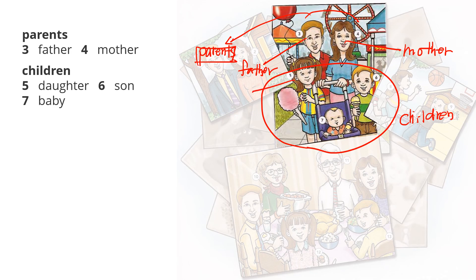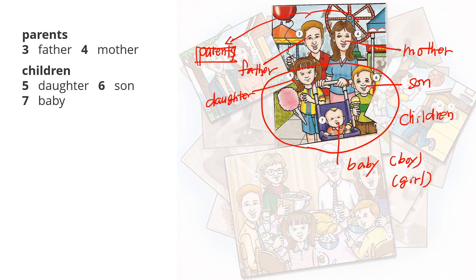She is a daughter — D-A-U-G-H-T-E-R. And he is a son. And the baby looks like a boy. Baby — or you can say baby boy or baby girl. Father. Mother. Daughter. Son. A baby — baby boy or baby girl.